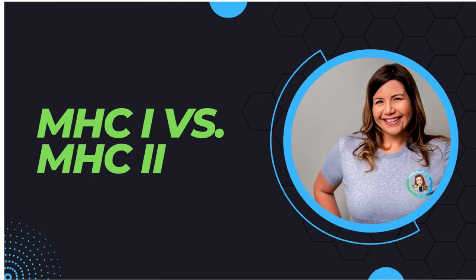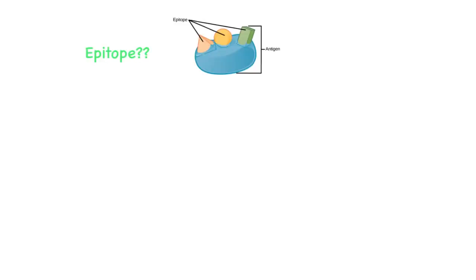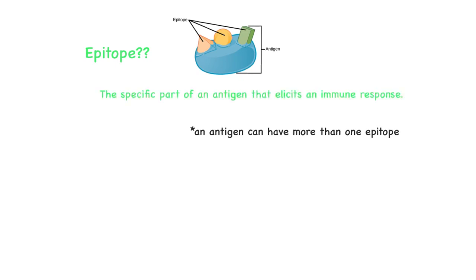We are going to learn all about the MHC molecule and what it does. T cell receptors recognize a peptide epitope that comes from a partially degraded protein. An epitope is the specific part of an antigen that is recognized by the immune system — in other words, the part of an antigen that elicits an immune response.